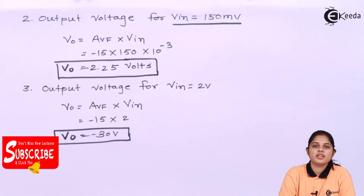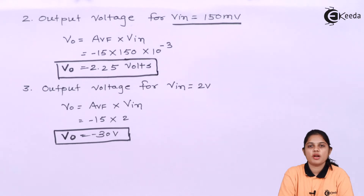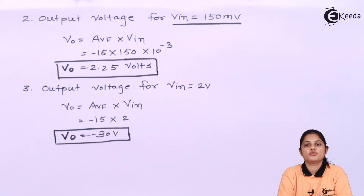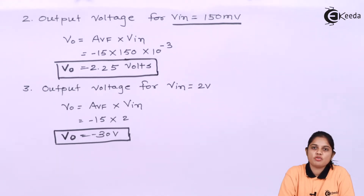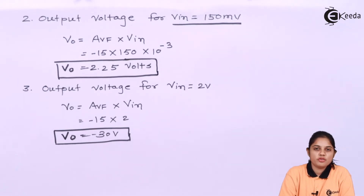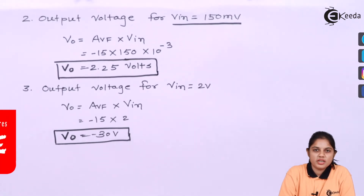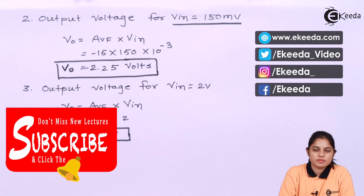The output voltage is negative. The negative sign indicates that the output voltage will be an inverted version of the input signal — it will be 180 degrees out of phase with the input signal. Thank you for watching this video. Stay tuned to Ikeda. Do subscribe.